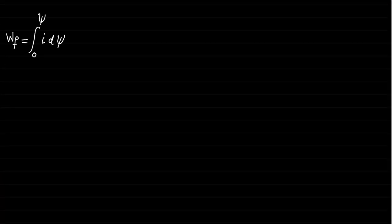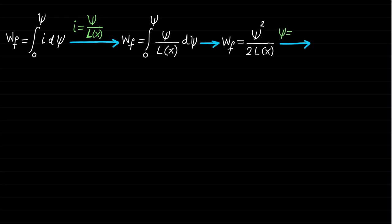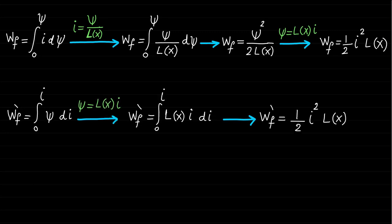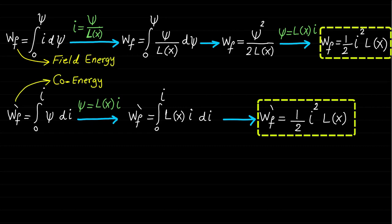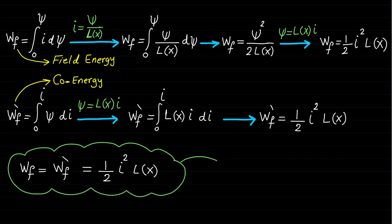As we learned before, the field energy WF and the co-energy WF dash of the linear motion systems can be derived as follows, and they are equal to ½I²L(x). The field energy and the co-energy are the same and equal to ½I²L(x) because the magnetic system is assumed to be linear. This relationship is valid only if the magnetic system is a linear magnetic system.